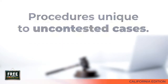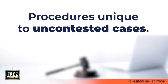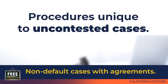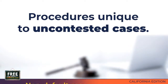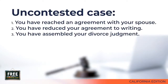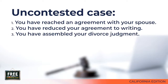Let's start with the procedures for submitting a divorce judgment that are unique to uncontested cases, which some people also refer to as non-default cases with agreements. For purposes of the following discussion, I'm assuming you have an uncontested case where you and your spouse were able to agree on all issues and you have reduced that agreement to writing. I'm assuming you have drafted your FL-180 judgment and assembled your judgment by attaching either a marital settlement agreement or the collection of judicial council forms discussed in earlier videos. I am not talking about default with an agreement cases.